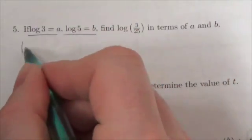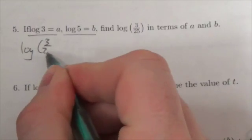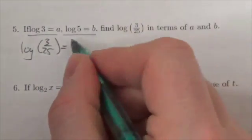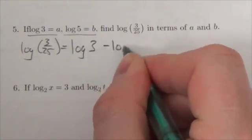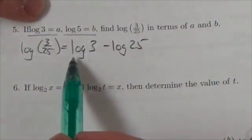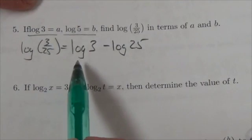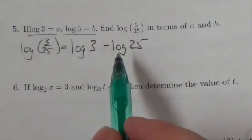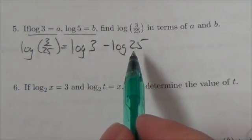So, the log of 3 over 25 is going to be equal to the log of 3 minus the log of 25. Now, right away, I've got my log of 3 pulled out of that. But now I'm stuck with this log of 25.